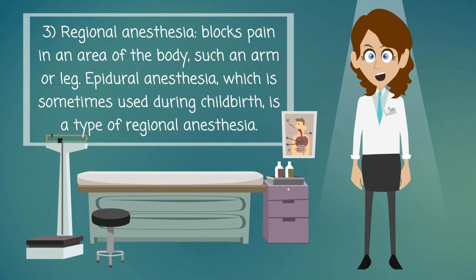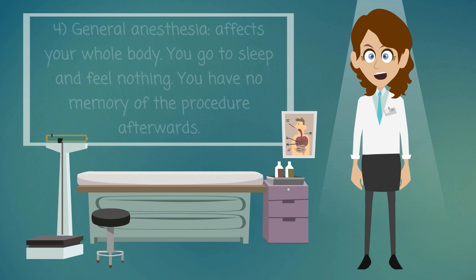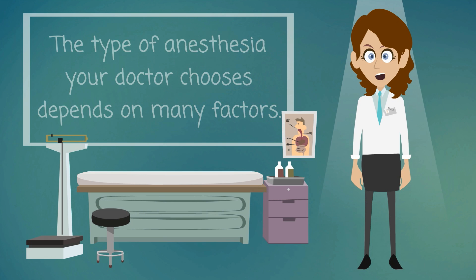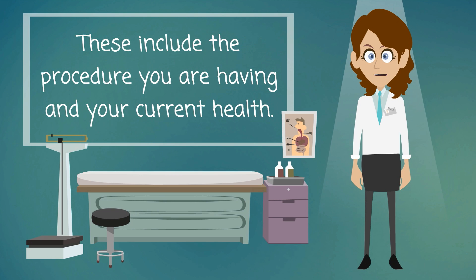Epidural anesthesia, which is sometimes used during childbirth, is a type of regional anesthesia. General anesthesia affects your whole body — you go to sleep and feel nothing, with no memory of the procedure afterwards. The type of anesthesia your doctor chooses depends on many factors, including the procedure you are having and your current health.